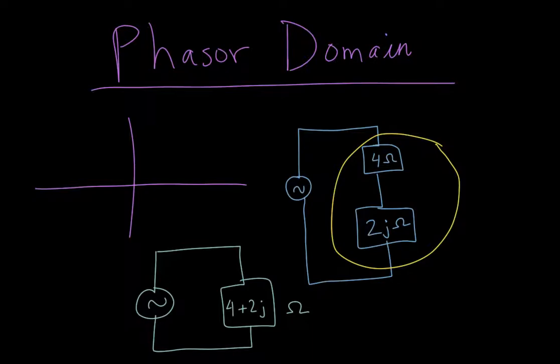Now in the phasor domain, we can also express this as a magnitude and an angle. So you'd have some number here, and then you would write the angle in which that number is directed in. So it has some angle with the degree sign.